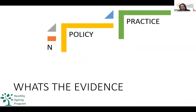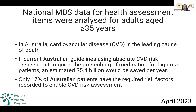Ultimately we're not writing guidelines for guidelines' sake — we're writing them to move into practice. So what's the evidence that all these guidelines are actually taken up? Looking at Australian national MBS data, the leading cause of death is heart disease. Current Australian guidelines say that using the absolute cardiovascular risk assessment — available on the Department of Health and Heart Foundation websites — could save $5.4 billion a year.